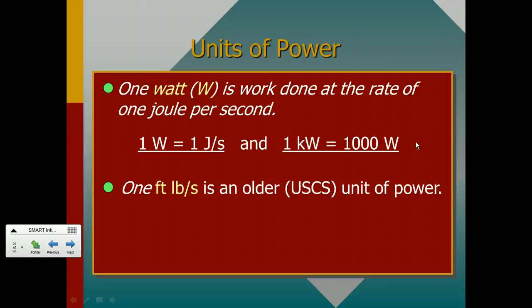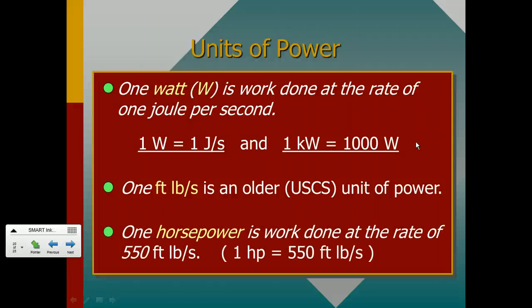In the U.S. system, we use the foot-pound per second, but that's not really a very useful one because it's an older unit. And so really, we use the horsepower in the U.S. system. And one horsepower is the work that's done at a rate of 550 foot-pounds per second. And we'll use the horsepower in next class's lab.